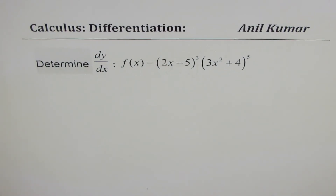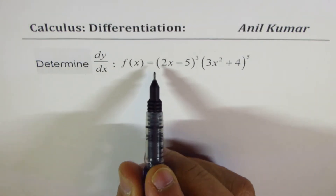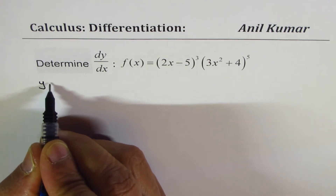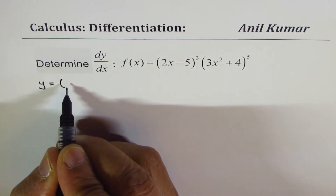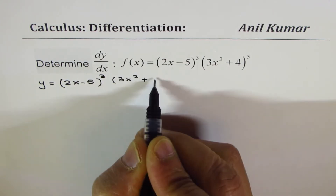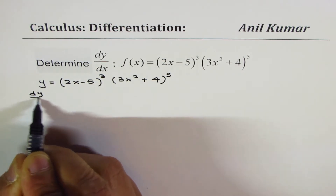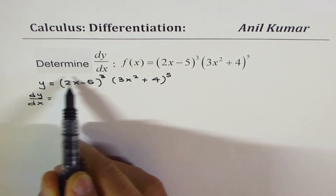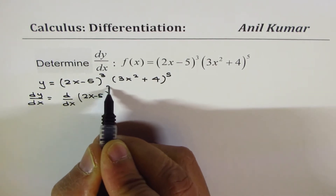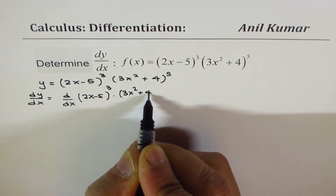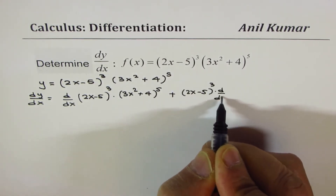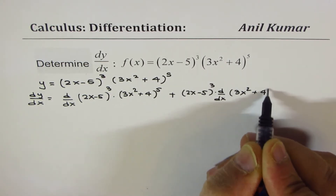Now let us differentiate and simplify the given function. We have f of x equals to 2x minus 5 whole cube times 3x squared plus 4 to the power of 5. So we'll apply product rule to differentiate. We'll write in terms of y: y equals to 2x minus 5 whole cube times 3x squared plus 4 to the power of 5. Differentiating with respect to x, applying the product rule, we have d/dx of 2x minus 5 whole cube times 3x squared plus 4 to the power of 5, plus 2x minus 5 whole cube times the derivative of 3x squared plus 4 to the power of 5.